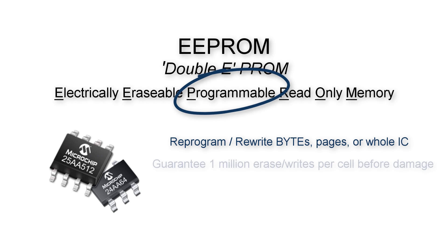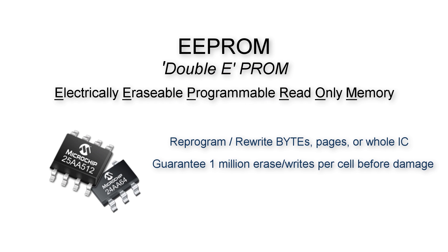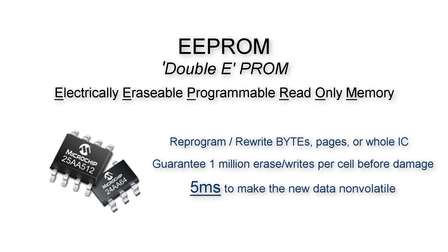Most data sheets list 1 million rewrites before a double EEPROM is damaged. Note that each change or erase-rewrite takes about 5 milliseconds to lock in your changes before the power to the part can be cut, or your new data may not have gotten saved.